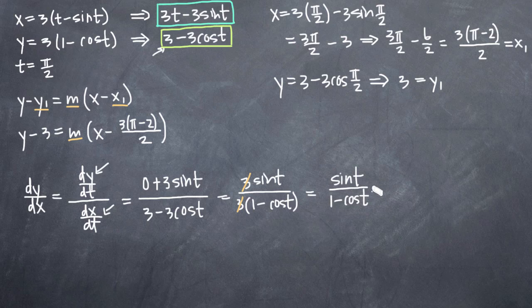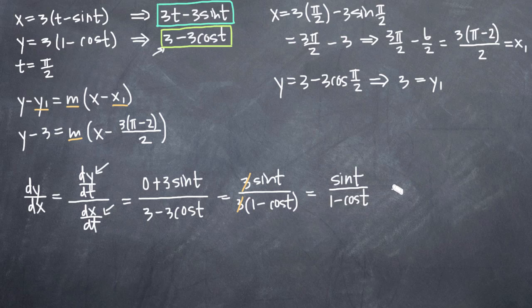If we had been asked to find the derivative of this parametric curve generically, sine t divided by (1 minus cosine t) would be our answer. But because we've been asked to find the derivative at a particular point, we'll plug in pi over 2 for t to get the slope m. So we'll evaluate sine of pi over 2 divided by 1 minus cosine of pi over 2.